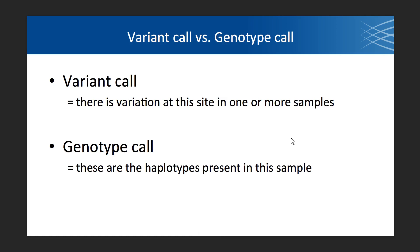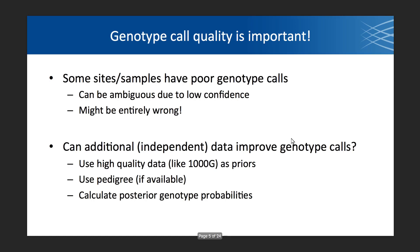The variant call is the site — the line in the VCF — indicating there is variation somewhere in one of our samples, some copy of chromosomes different from the reference. But the genotype call tells you exactly which alleles are present in each of those samples. Call quality is important because even if you have a variant you have really high confidence in, within the samples that have that variant, the genotype calls might be ambiguous.